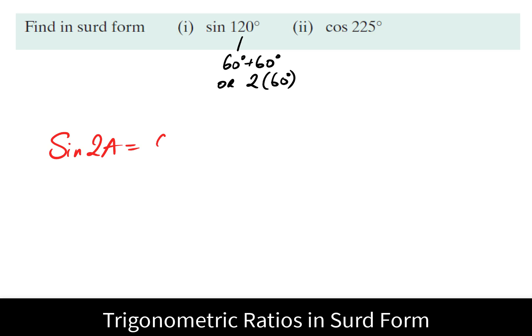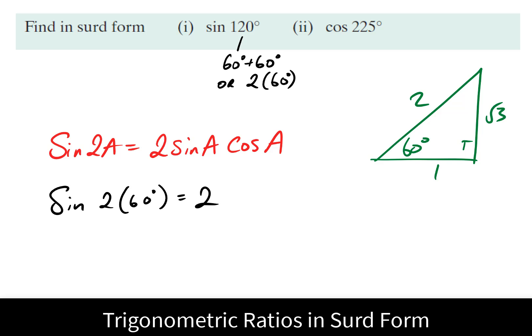There's a rule that says sine of 2A is 2 sine A cos A, and we could work out sine A which is root 3 over 2, and cos A, cos 60, which is half. So two times this would be root 3 over 2. That's a more formal approach, although it's not covered in this chapter.